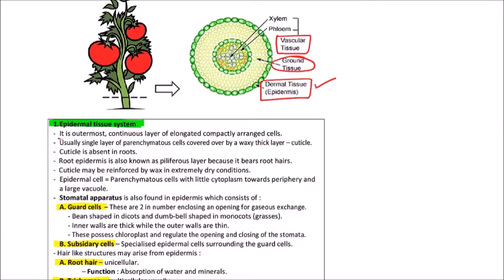Epidermal tissue system is outermost continuous layer of elongated compactly arranged cells. Usually single layer of parenchymatous cells covered by a waxy thick layer. Cuticle is present over the cells.